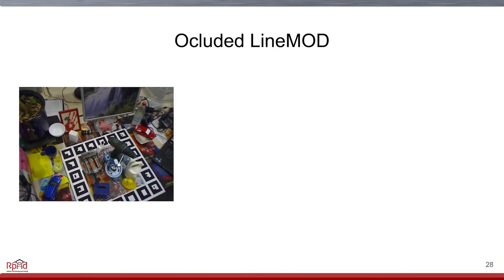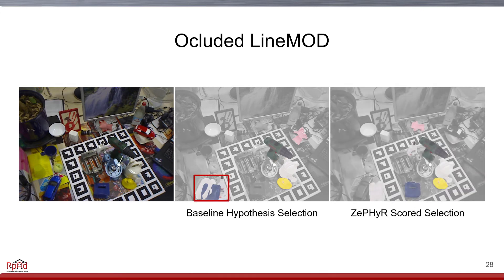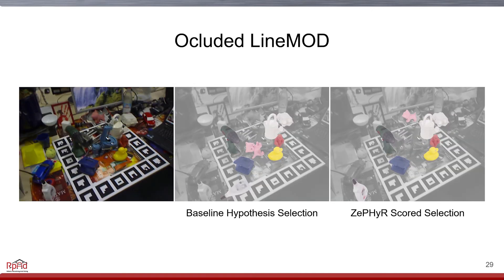In practice, we see that while the baseline fails on several objects, clumping these objects together, our method correctly estimates their poses. In this case, the naive scoring of the point pair features described by Drost et al. is not accurate in this highly cluttered scene.